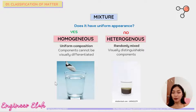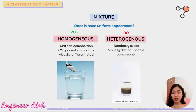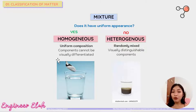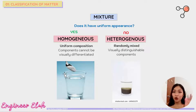For example, if you mix salt and water and stir it, you get a clear mixture. By definition, a homogeneous mixture has uniform composition and the components cannot be visually differentiated — you can no longer see the salt by your naked eye because it has dissolved. So you cannot visually differentiate the components.